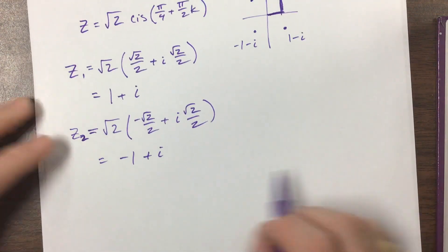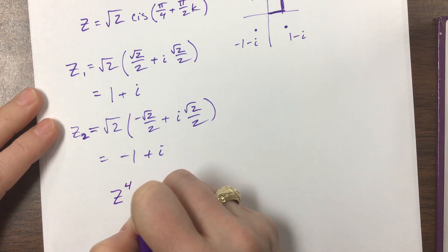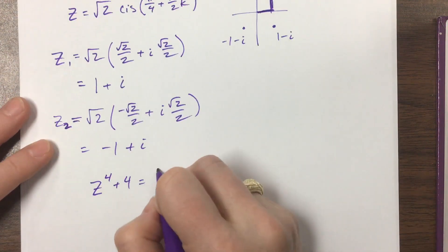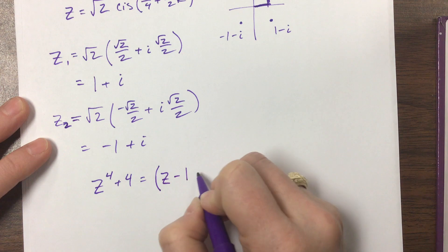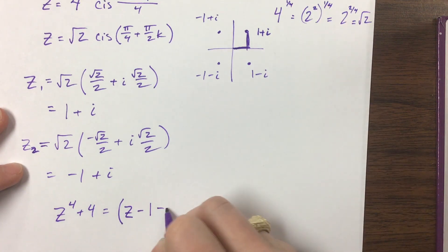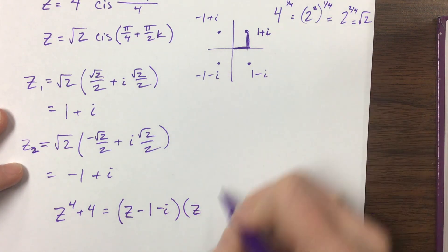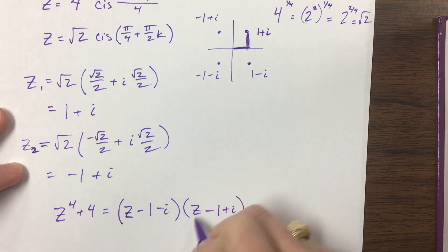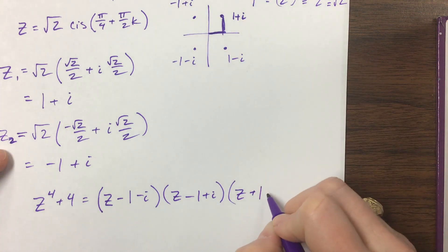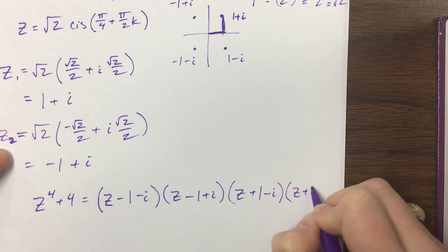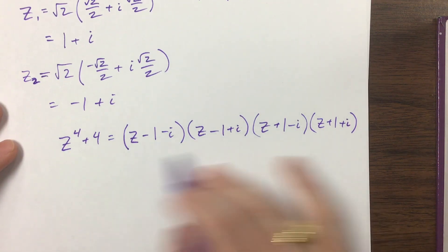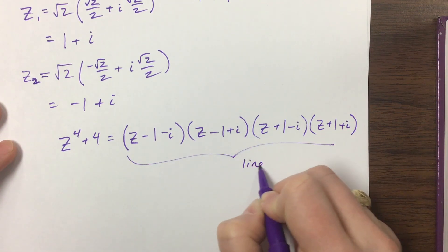So if they ask me to factor z to the 4th plus 4, the four fourth roots tell us the linear factors. We get factors like (z minus 1 minus i), (z minus 1 plus i), (z plus 1 minus i), and (z plus 1 plus i). These are linear factors, but they're non-real.